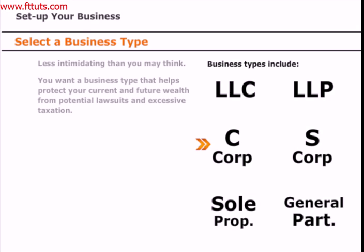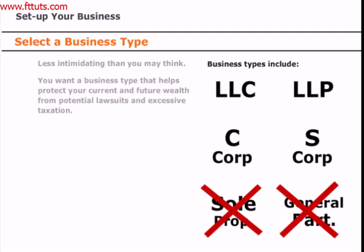Some of the options to consider include a Limited Liability Company (LLC), a Limited Liability Partnership (LLP), a C corporation, or an S corporation. Each offers different levels of asset protection and different tax regulations. LLCs and partnerships are relatively easy to set up and maintain and offer great asset protection, while S or C corporations are more difficult to establish and also provide less asset protection. Most states also allow sole proprietorships and general partnerships, but these offer essentially no asset protection.